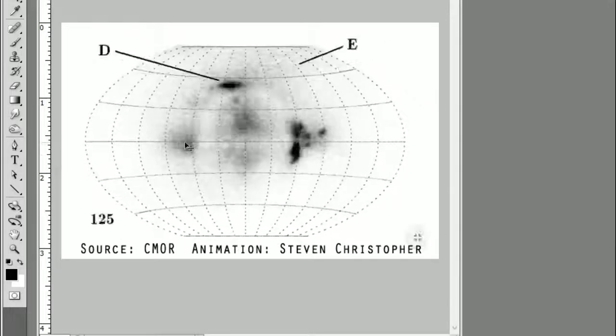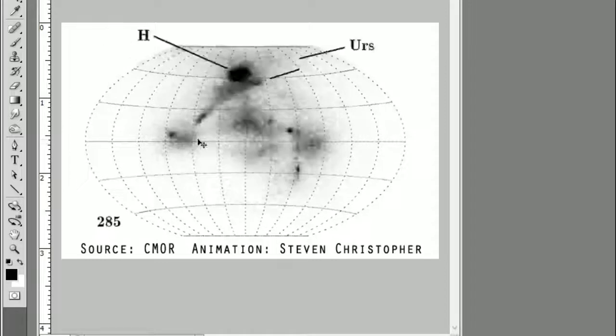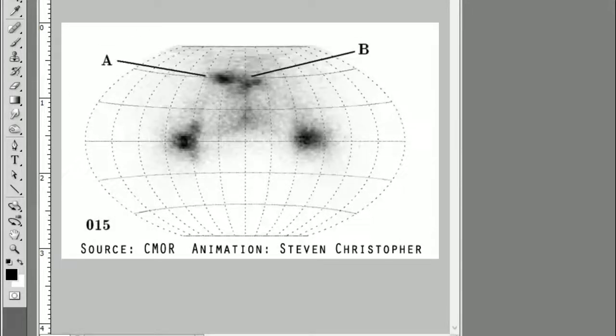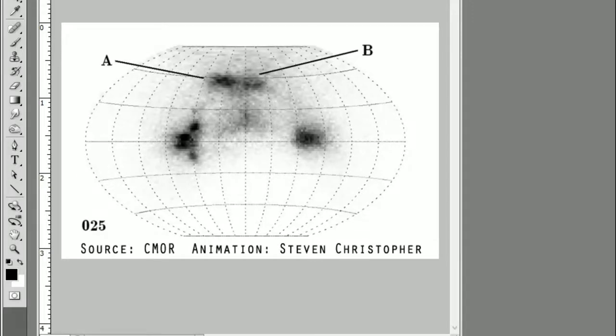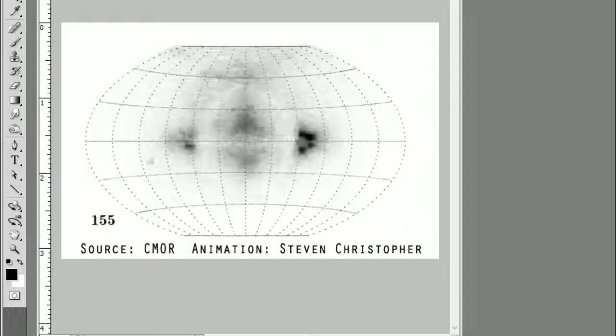When you look straight on like that, you're going to see more behind each other on the side. So you're going to get more activity on the right and left. That's why that is happening.